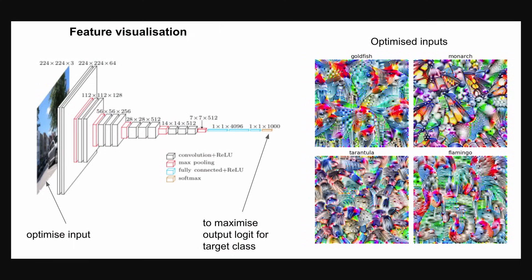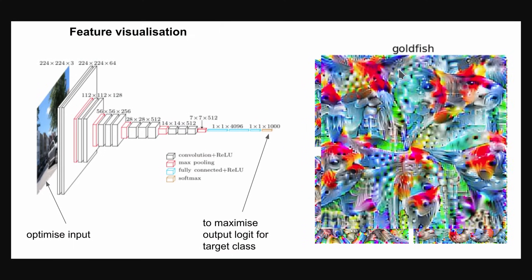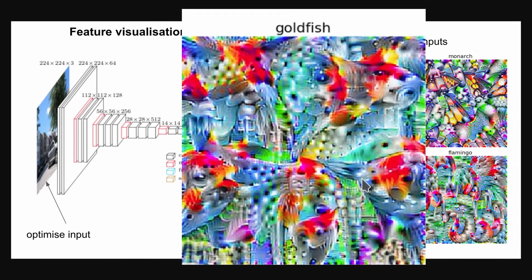So if you have an image classifier classifying different animals, you can take the class of goldfish and run gradient descent on the input image space to find the image that most strongly activates the goldfish output — effectively asking, what is the goldfishiest possible image? And the goldfishiest image does not look anything like a goldfish, but you can see a lot of goldfishiness — it's very brightly colored. This is very useful for debugging these models.